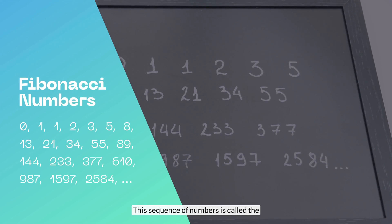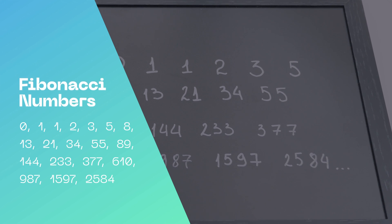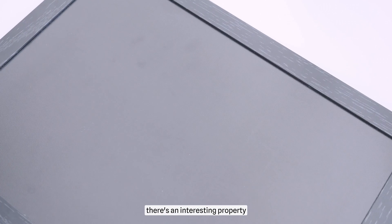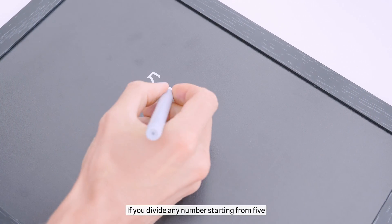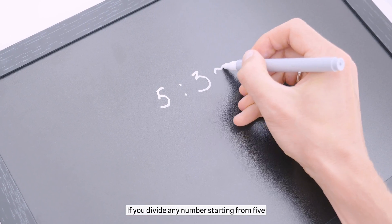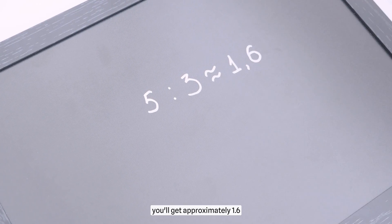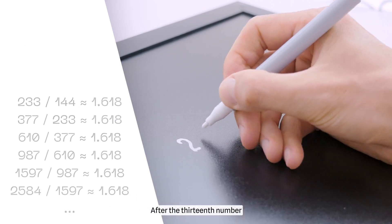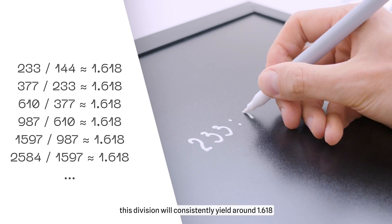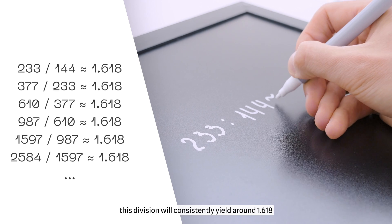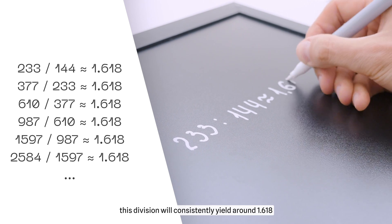This sequence of numbers is called the Fibonacci numbers. In these numbers there is an interesting property. If you divide any number starting from 5 by the previous number, you'll get approximately 1.6. After the 13th number, this division will consistently yield around 1.618.